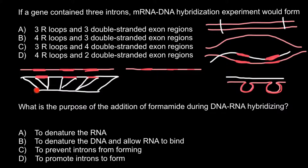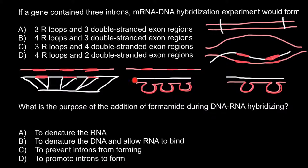Our mature message RNA is much shorter and the hybridization would look like this: one, two, and three introns present on the DNA would form so-called R-loops. The remaining fragments would be double-stranded hybrids between message RNA and DNA. So we would have one, two, three loops and one, two, three, four double-stranded fragments.